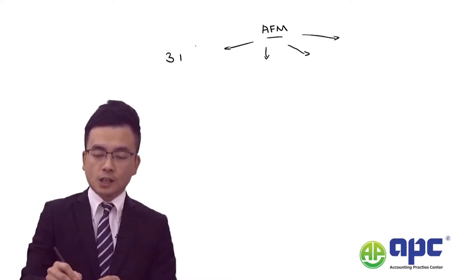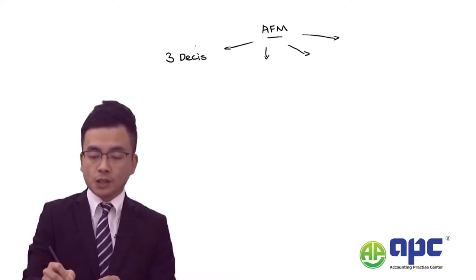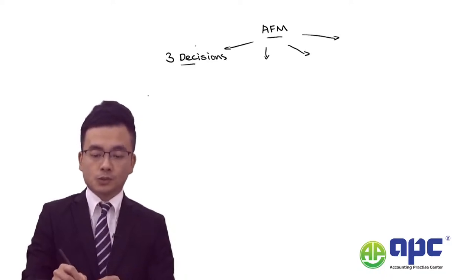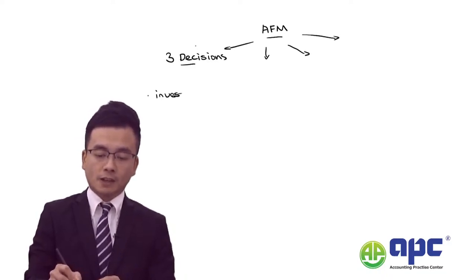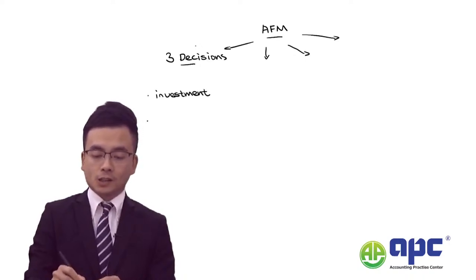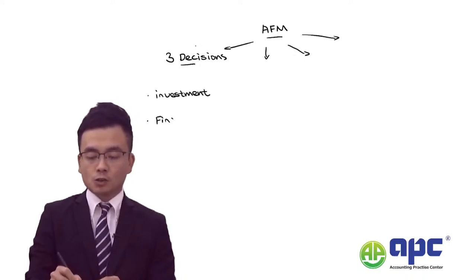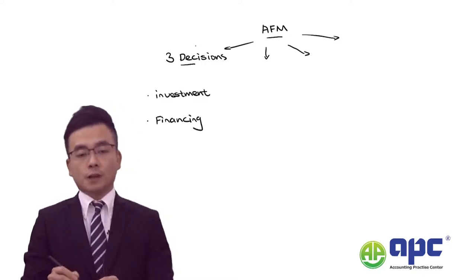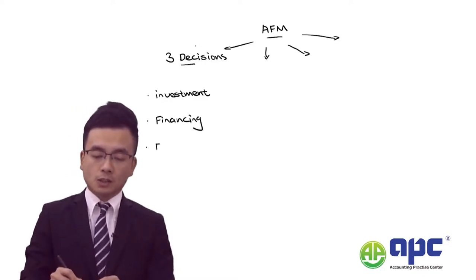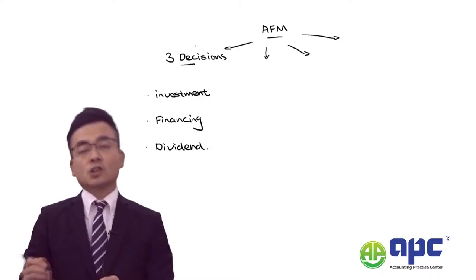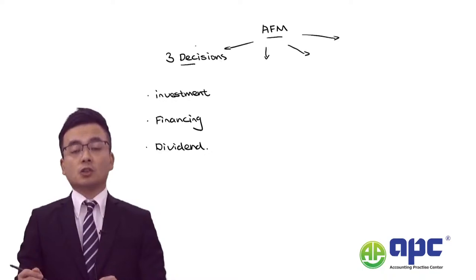There will be three decisions that we need to make in financial management, including the investment decision — which means spending money out in buying the asset — the financing decision, which means where does the money come from and the cost of finance, and also how we're going to be distributing the profit back to our investors, which means the dividend policy decisions.